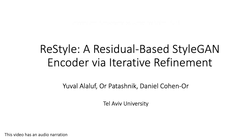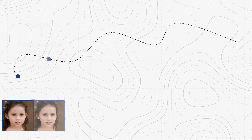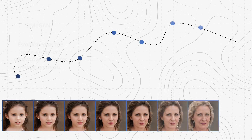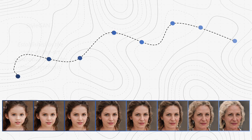We present ReStyle, a residual-based StyleGAN encoder via iterative refinement. With their ability to produce an endless collection of high-quality and diverse images across many domains, deep generative models such as StyleGAN have become the gold standard for image synthesis. Beyond their visual quality, these models contain a rich latent space providing users with unprecedented control.